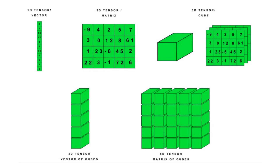As we said, a tensor is a multi-dimensional array, and it is depicted in this image. You can see that this is a one-dimensional tensor, which is also known as a vector. This is a two-dimensional tensor, which is known as a matrix. This is a three-dimensional tensor, which is essentially a cube of numbers. Similarly, we can have four-dimensional, five-dimensional, and n-dimensional tensors.